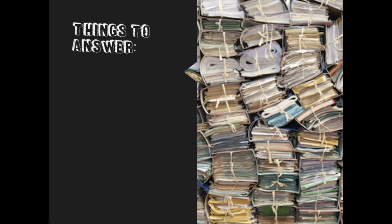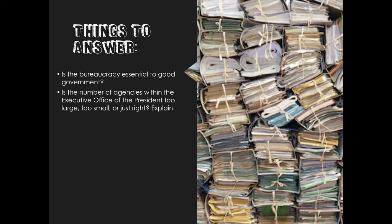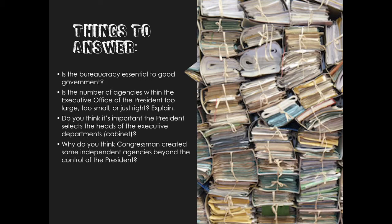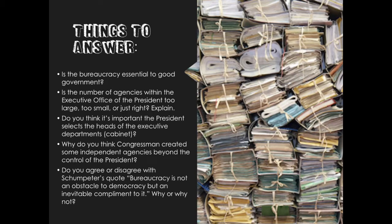This concludes our video on the federal bureaucracy. Here are a few questions to answer: Is the bureaucracy essential to good government? Is the number of agencies within the executive office of the president too large, too small, or just right? Do you think it's important that the president selects the heads of the executive departments? Why do you think Congress creates some independent agencies beyond the control of the president? And do you agree or disagree with Schumpeter's quote — 'Bureaucracy is not an obstacle to democracy, but an inevitable complement to it'? I look forward to hearing your answers.